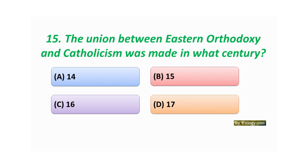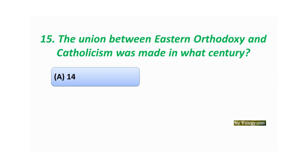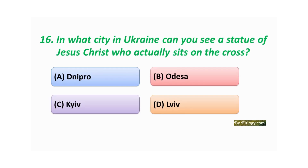Question number fifteen: The union between Eastern Orthodoxy and Catholicism was made in what century? Option A: 14th. Option B: 15th. Option C: 16th. Option D: 17th. The correct answer is Option A: 14th.